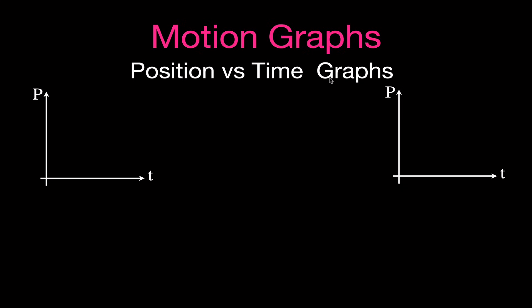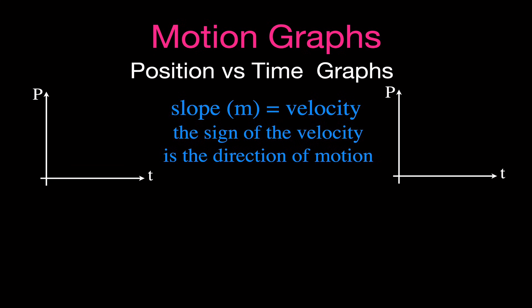For the position versus time graph, the slope of the line is always equal to the velocity. We use the symbol m for slope, like y = mx + b. The slope of the line or curve on the position versus time graph equals the velocity, and the sign of the velocity indicates the direction of motion — whether the slope is positive or negative tells you the direction.